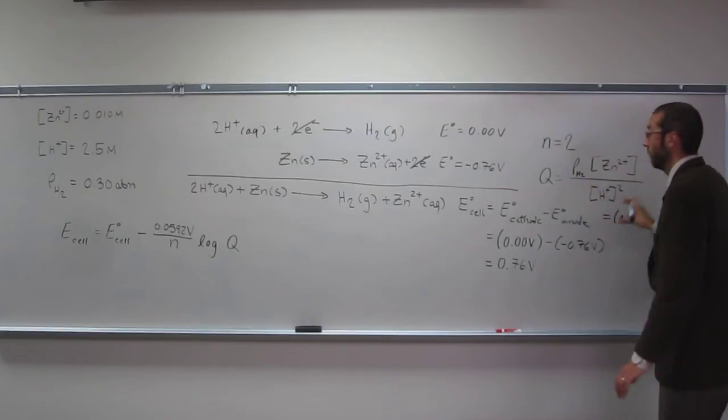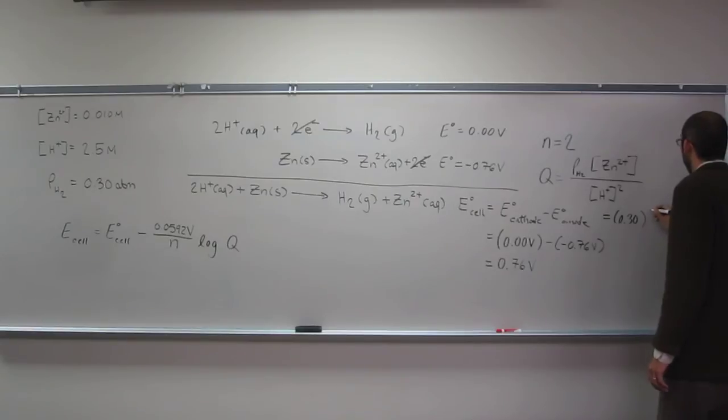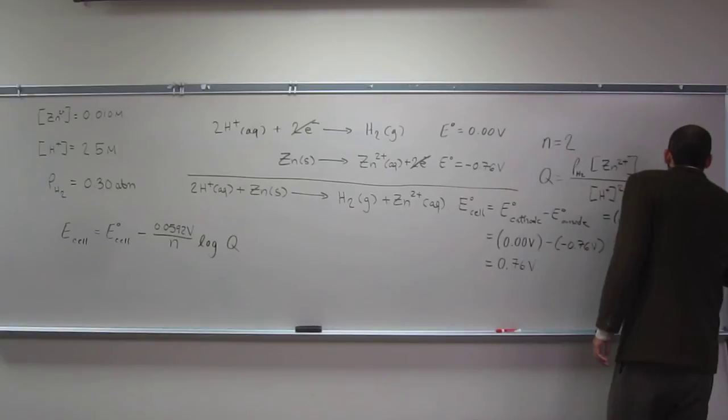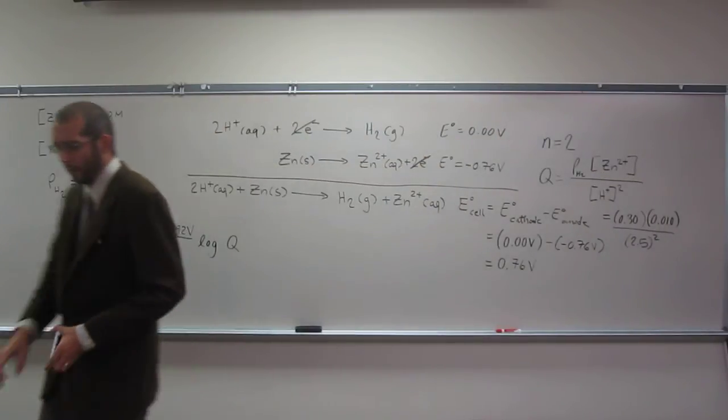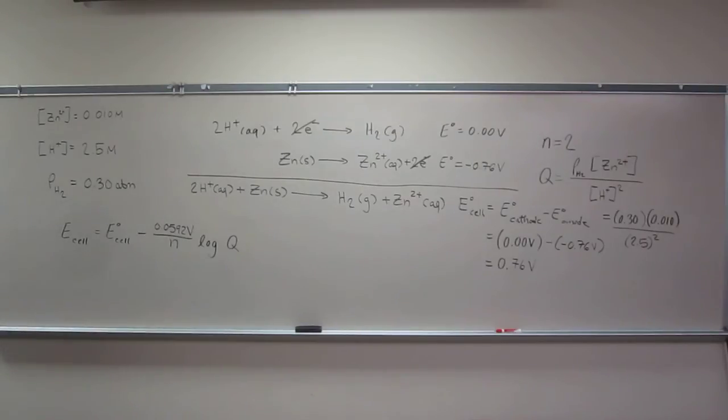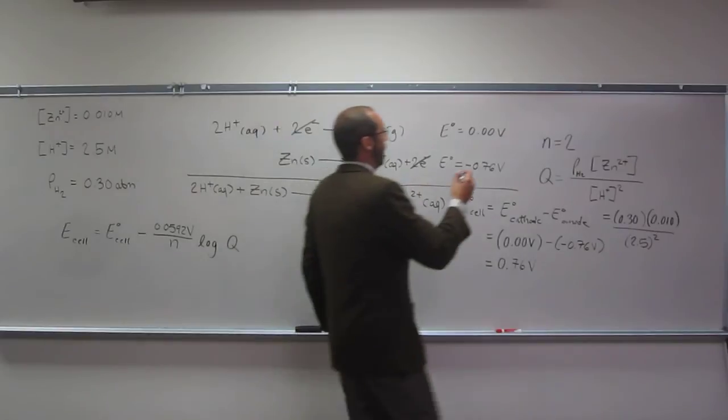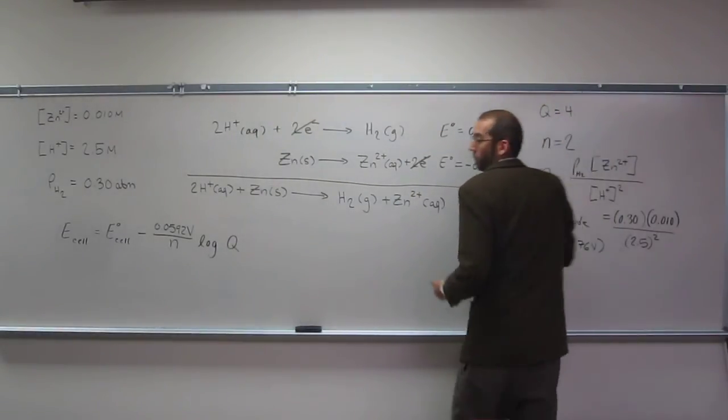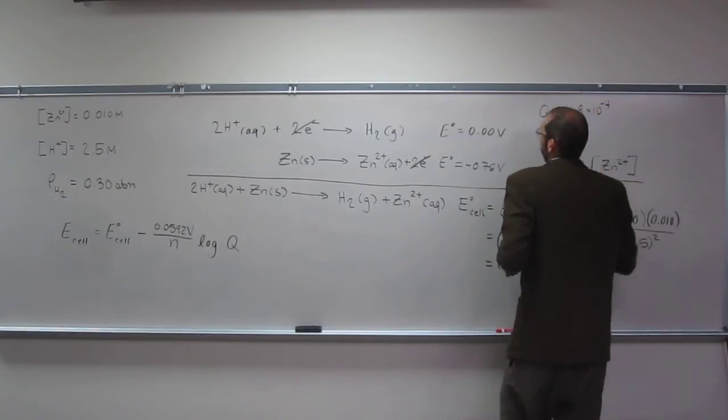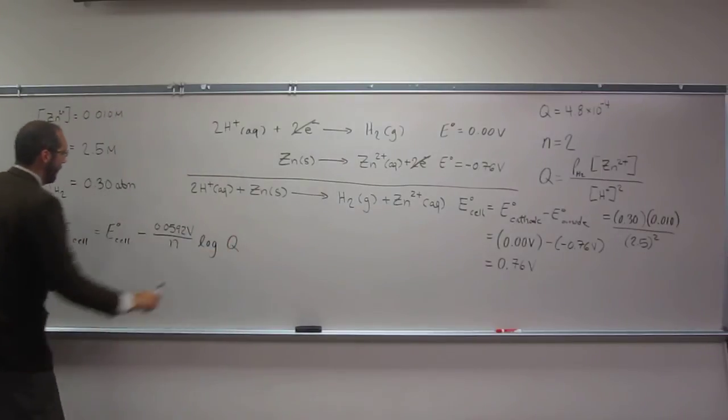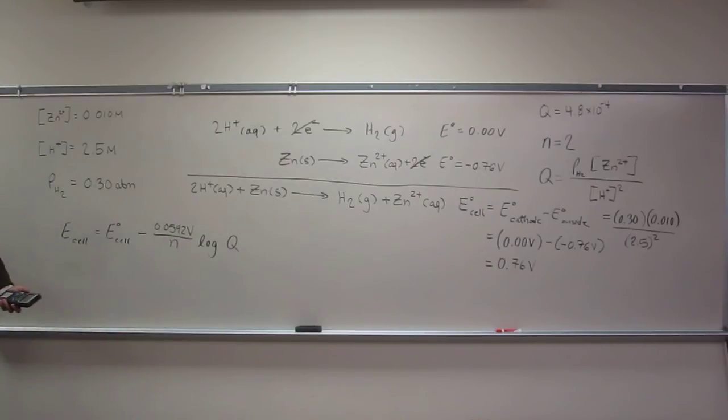And remember, no units for Q, so let's not put any of the units in there. So we substitute 0.30 times 0.010 divided by 2.5 squared. And for Q, I get a value of 4.8 times 10 to the negative 4. Okay, so we've got that, we've got that, we've got that. Units here are going to be in volts, so we should be set, right? So it's just kind of a plug and check.